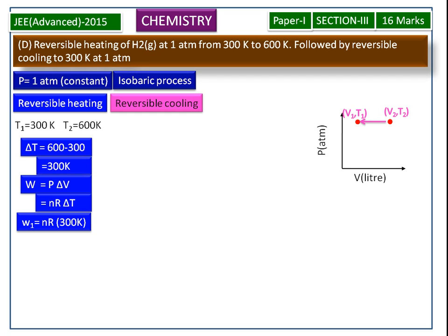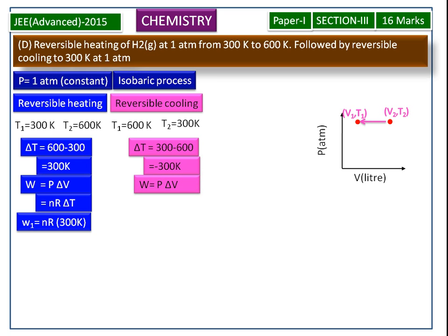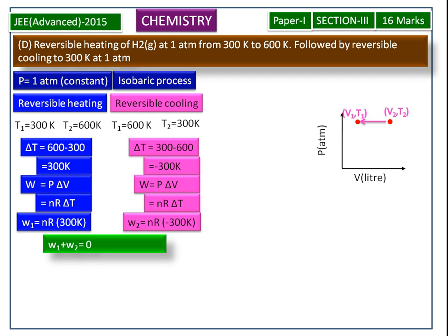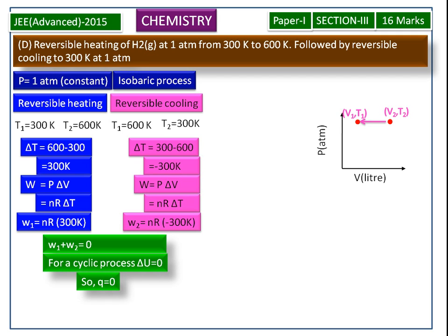Similarly, for reversible cooling, W₂ is equal to −nR × 300 Kelvin. Summing these two values, the total work done equals 0. Because of this cyclic process, the change in internal energy is equal to 0. Therefore, W is equal to 0 and delta U is equal to 0, so Q is also equal to 0.